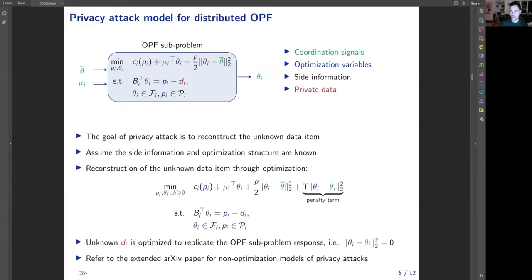The only private data assumed in this work is the load at the node of interest, and the rest of information is considered to be publicly known. We assume that this side information on the cost and transmission system topology and ADMM parameters, as well as the structure of this optimization problem, are known to the privacy adversary.